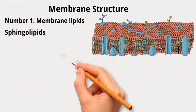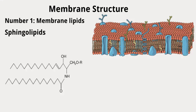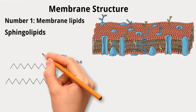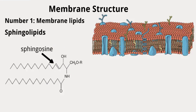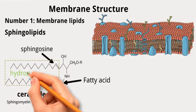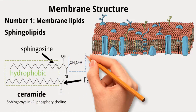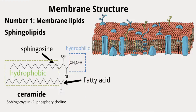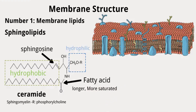Sphingolipids are another class of membrane lipids, although less common than phospholipids. These lipids are based on a molecule called sphingosine, which contains a long hydrocarbon chain. Sphingolipids consist of sphingosine linked to a fatty acid, forming ceramide. Different types have additional groups attached, such as sphingomyelin, when a phosphorylcholine group is added. All sphingolipids are amphipathic, but their fatty acyl chains are typically longer and more saturated than those of phospholipids.